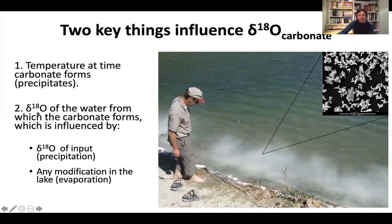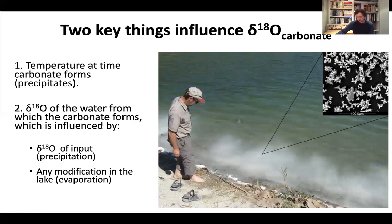The second effect is the oxygen isotope composition of the water from which the carbonate is forming. That is influenced by the oxygen isotope composition of the water in the lake, which is in turn influenced by the oxygen composition of the input — the precipitation — and also, once the water is in the lake, its oxygen isotope composition can be modified from what it was originally, for instance by evaporation.